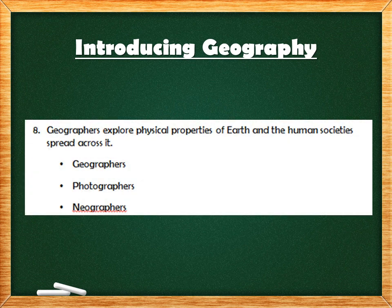Question 8 is a multiple choice question: blank explore physical properties of Earth and the human society spread across it. The answer options are geographers, photographers, or neographers. Geographers is the correct answer.